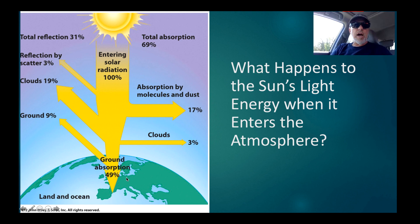Only about 49% is absorbed by the ground. Another 3% is absorbed by clouds, and then 17% is absorbed by molecules in the air and dust in the air. So that makes a grand total of 69% of total absorption.